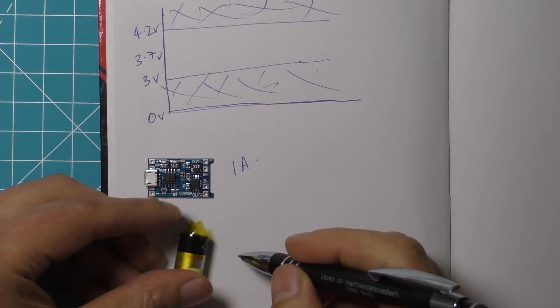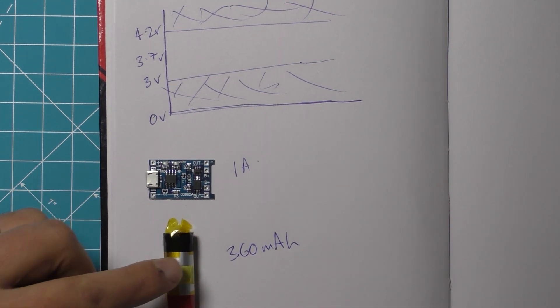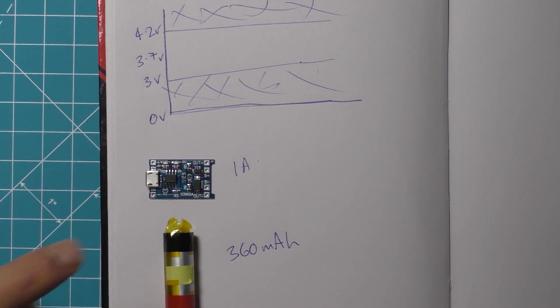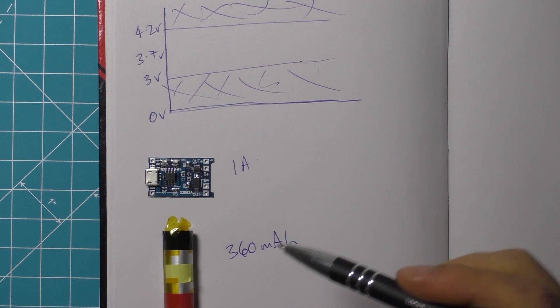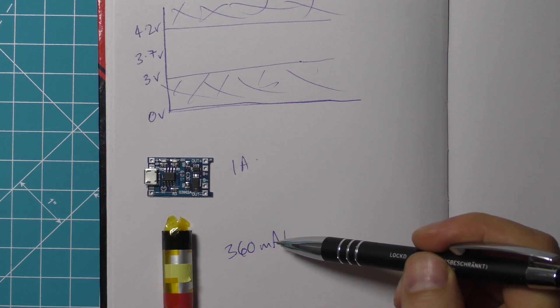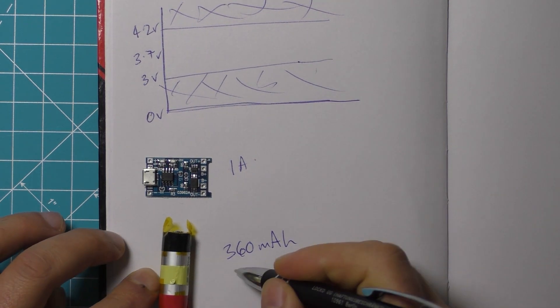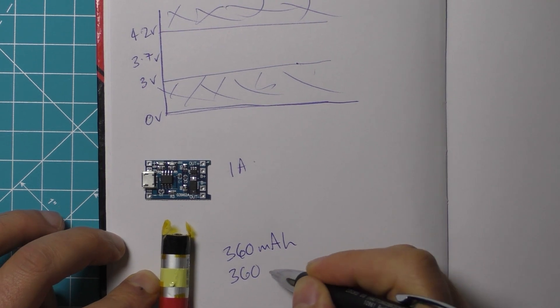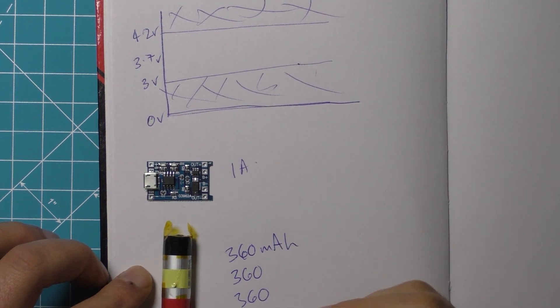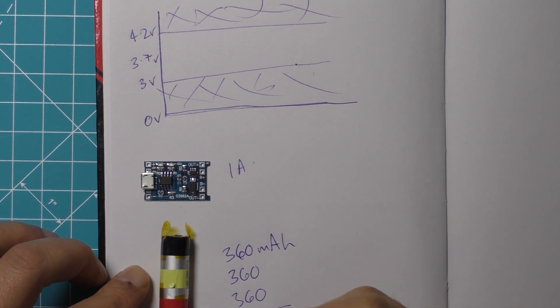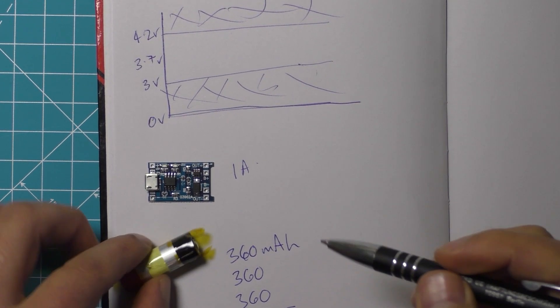Looking at these cells, this one is 360 milliamp hours and lithium iron cells tend to have a C rate of 1 and that means that a 360 milliamp hour cell shouldn't be charged with more than 360 milliamps. Remember that this charging board is going to give out 1 amp so what we can actually do is we can connect three of these in parallel and that will keep the voltage the same still in this range but it will triple the capacity so it will be the sum of these, so it will be a 1080 milliamp hour cell with three of these running in parallel.